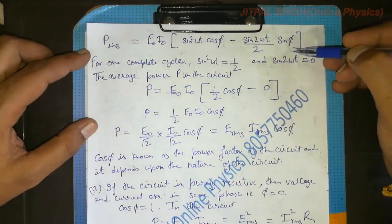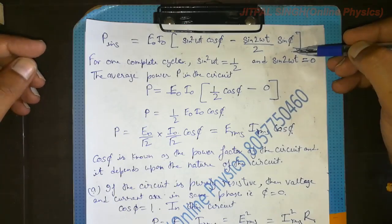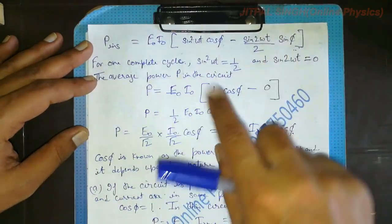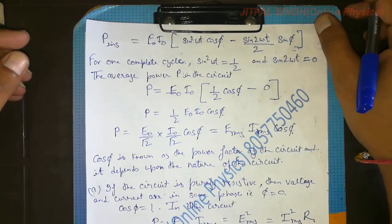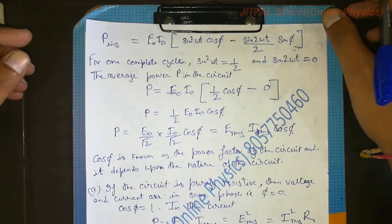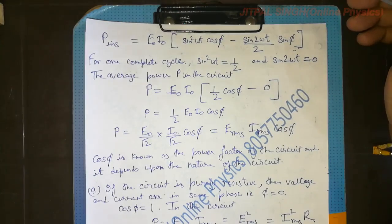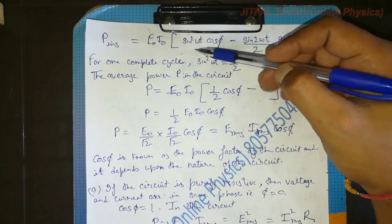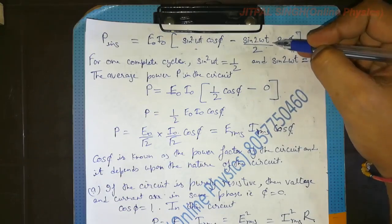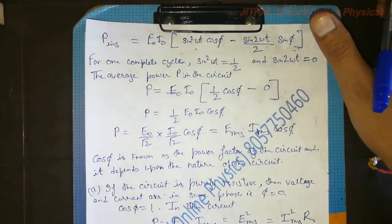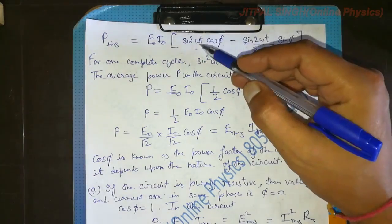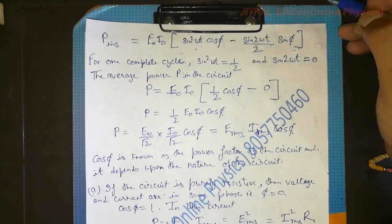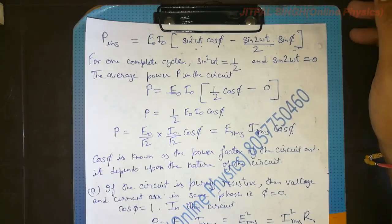In order to get the average power, we have to integrate this expression between 0 and capital T, where T = 2π/ω. For one complete cycle, the integral of sin²(ωt) gives one-half, and the integral of sin(2ωt) is 0. You can use these values directly. If not satisfied, please integrate sin²(ωt) and sin(2ωt) between 0 and T = 2π/ω, and don't forget to divide by T.